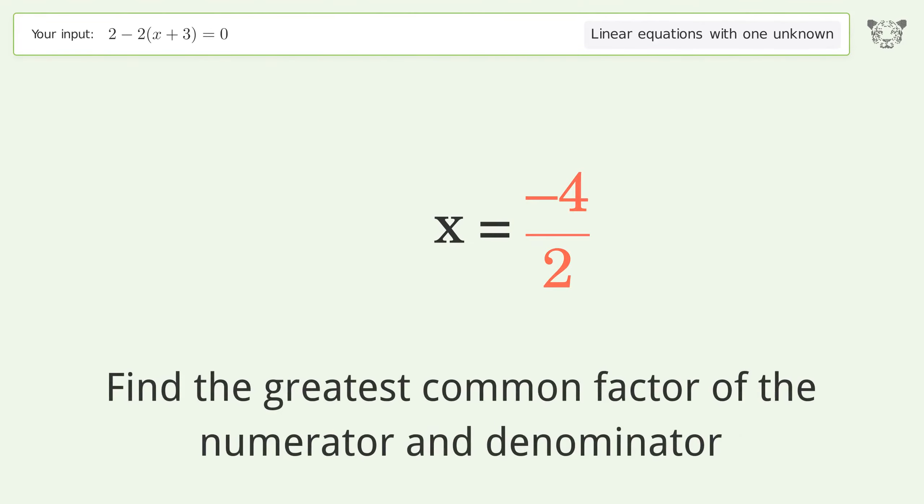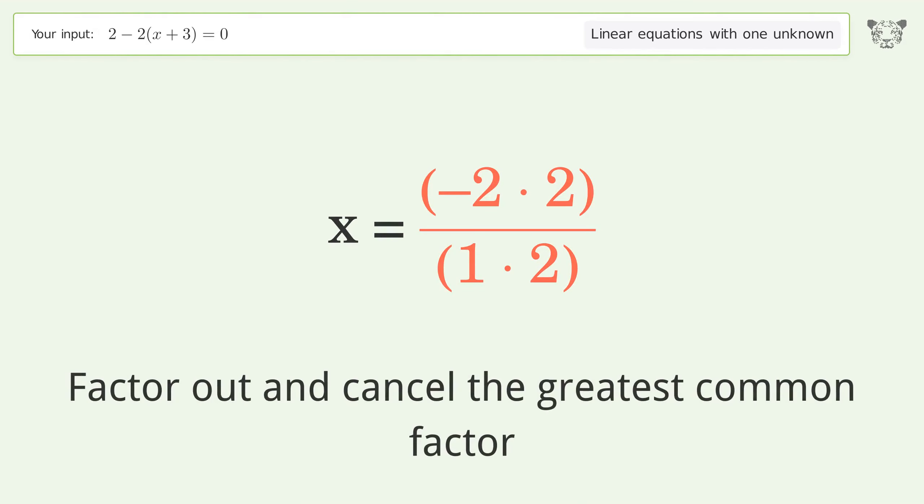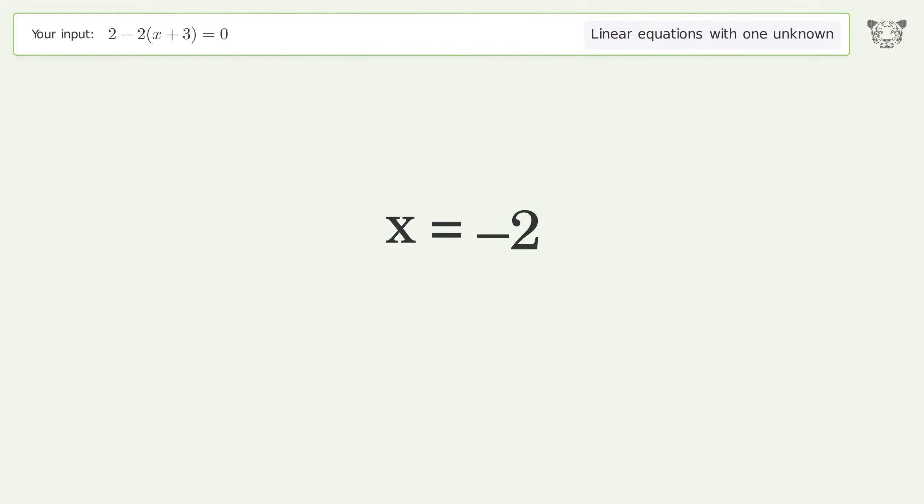Find the greatest common factor of the numerator and denominator. Factor out and cancel the greatest common factor. And so the final result is x equals negative 2. Thank you.